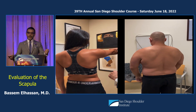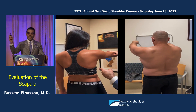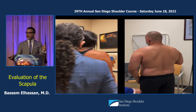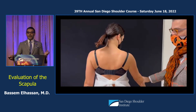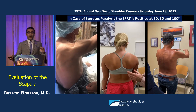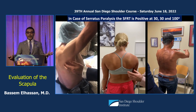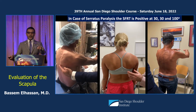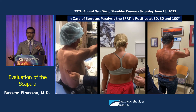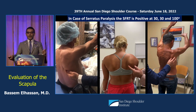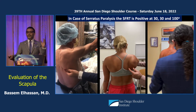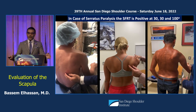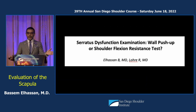We call it the SFRT test — shoulder flexion resistance test — at 30, 60, and 100 degrees. If the test is negative at 100 degrees, it means pect minor hyperactivity and the serratus is normal. For serratus paralysis, the test is positive at 30, 60, 100, and 120 degrees — positive at all angles. That is a positive SFRT test, indicating serratus paralysis regardless of what the EMG says. We have published on this.